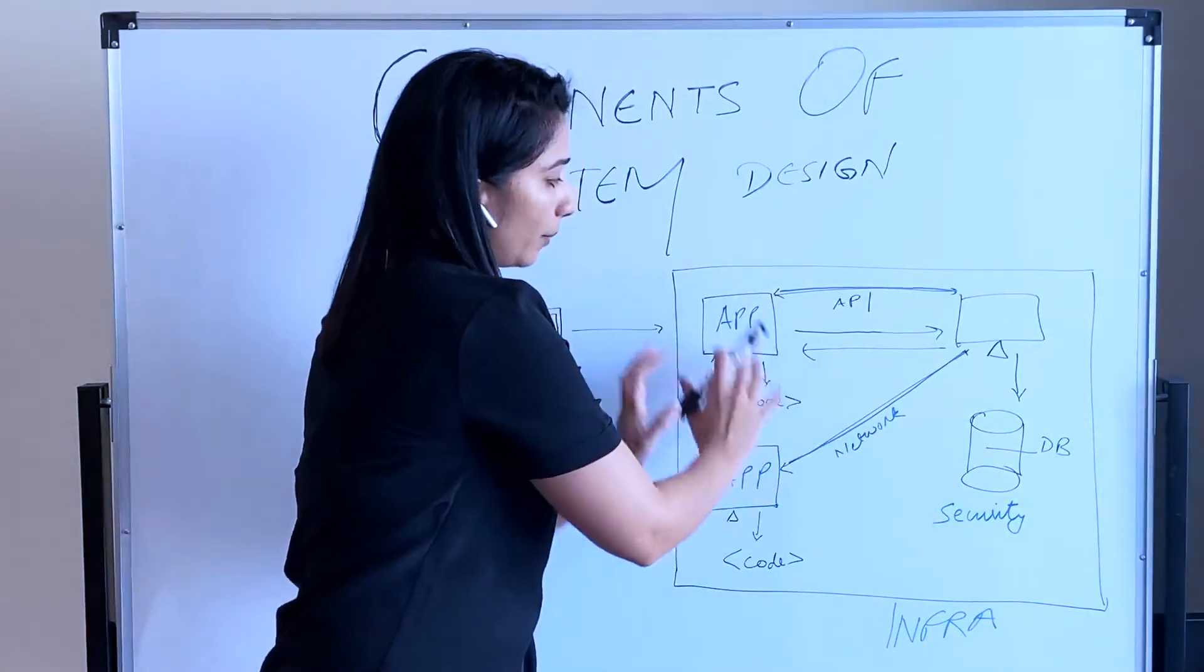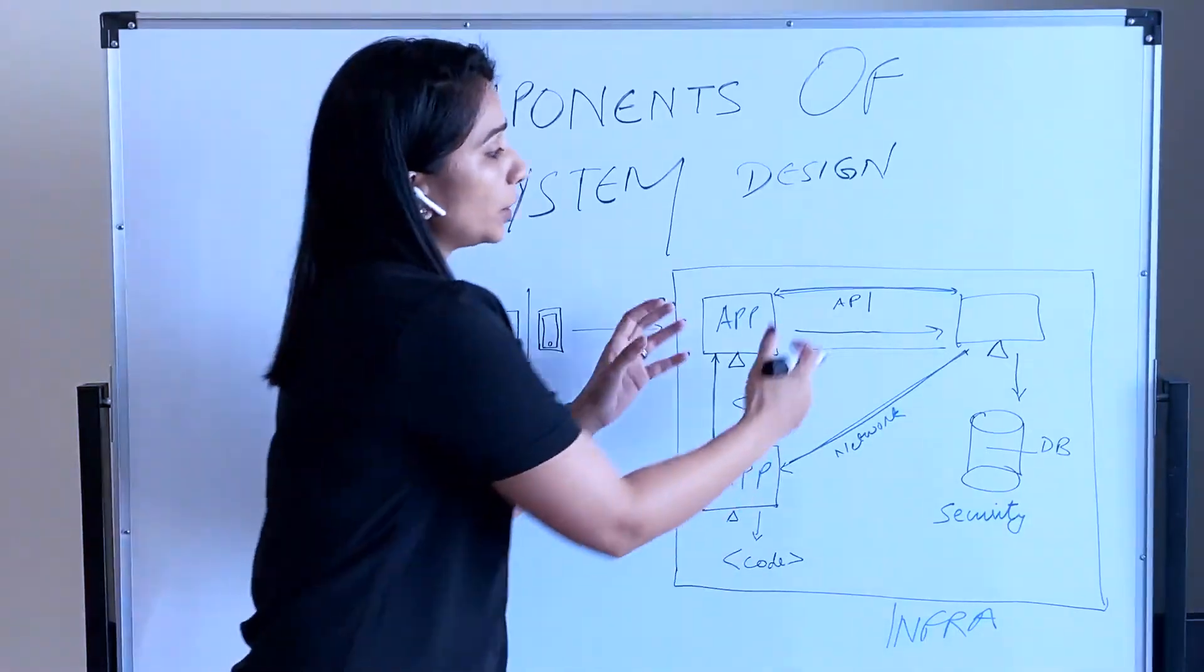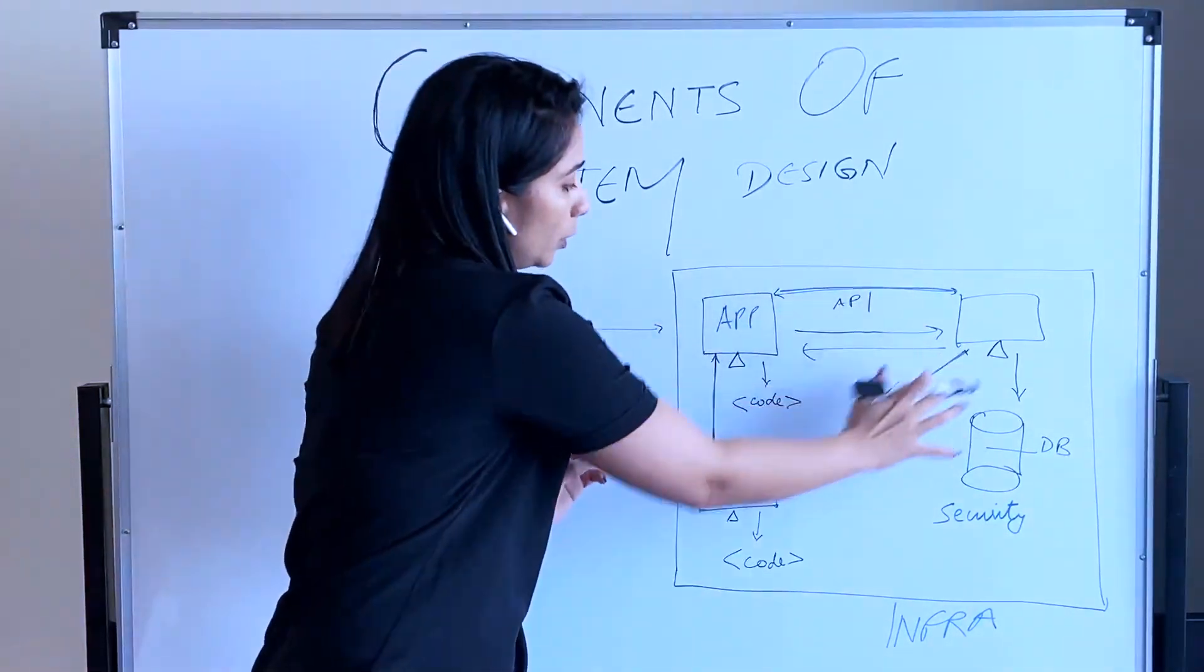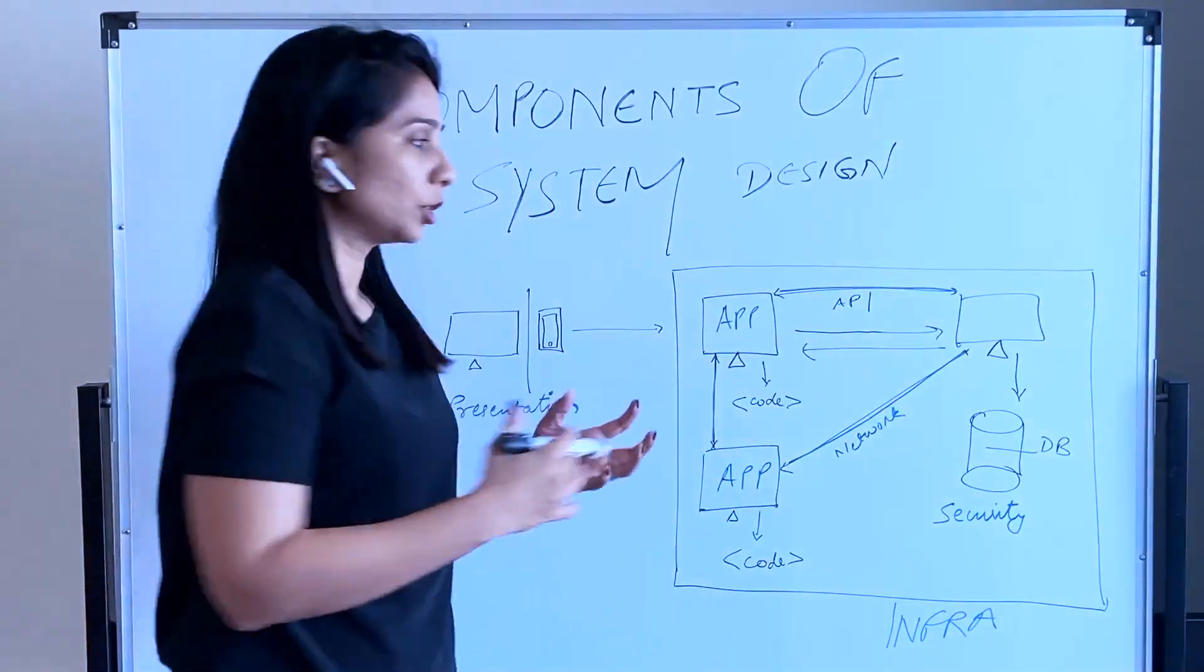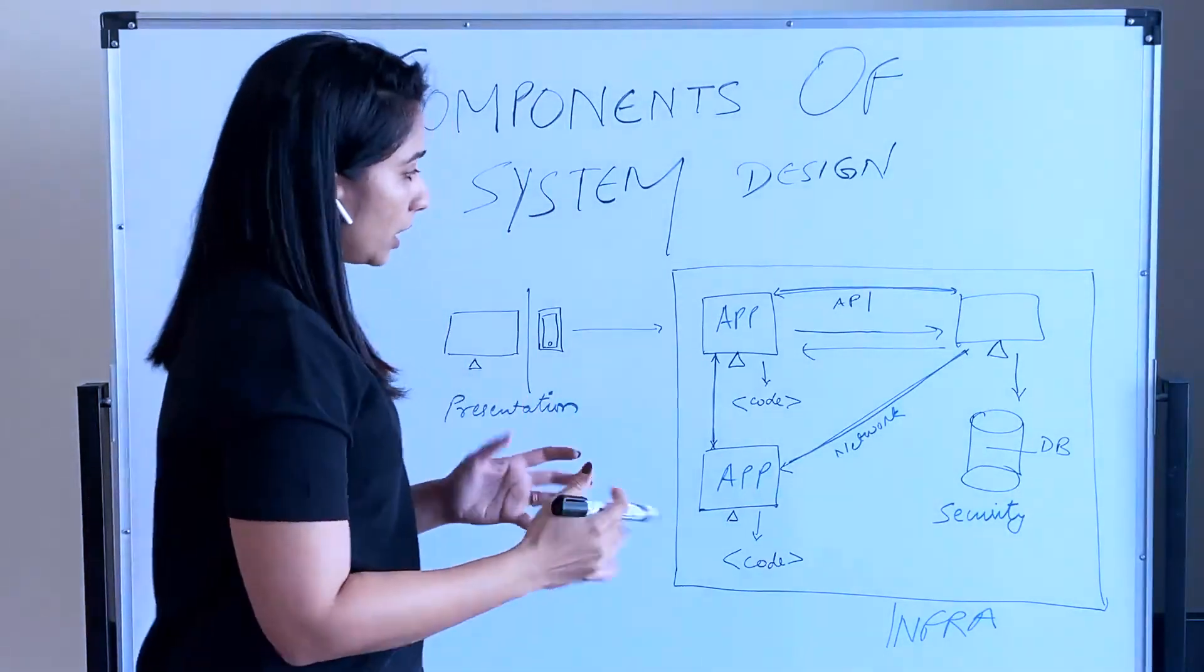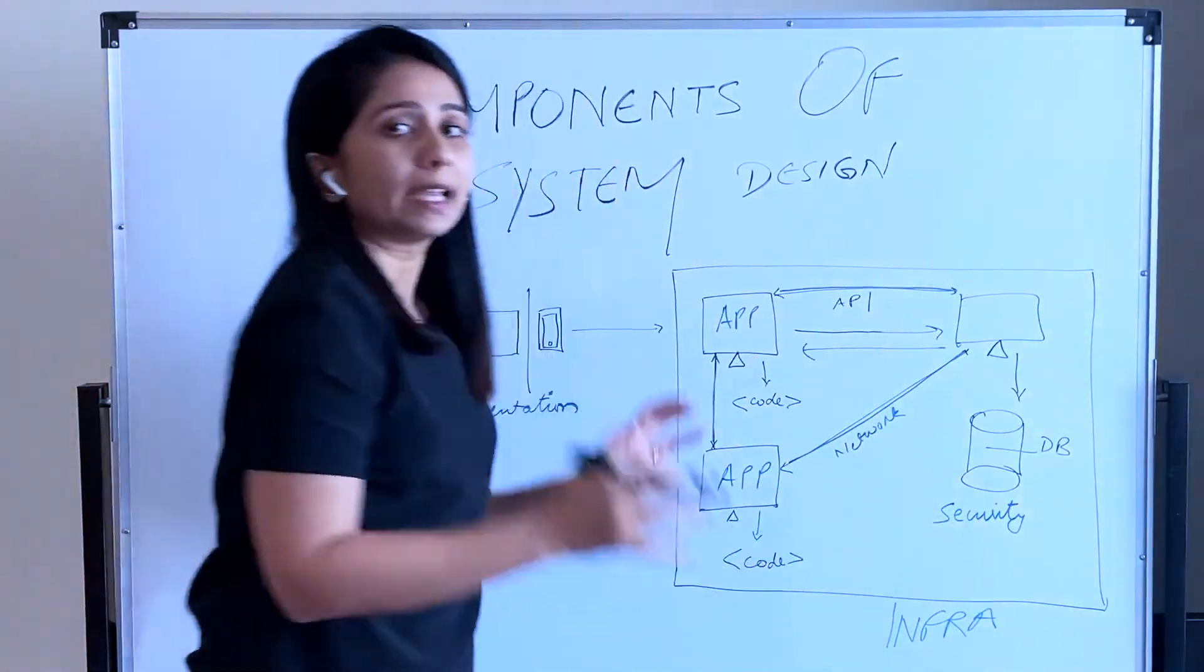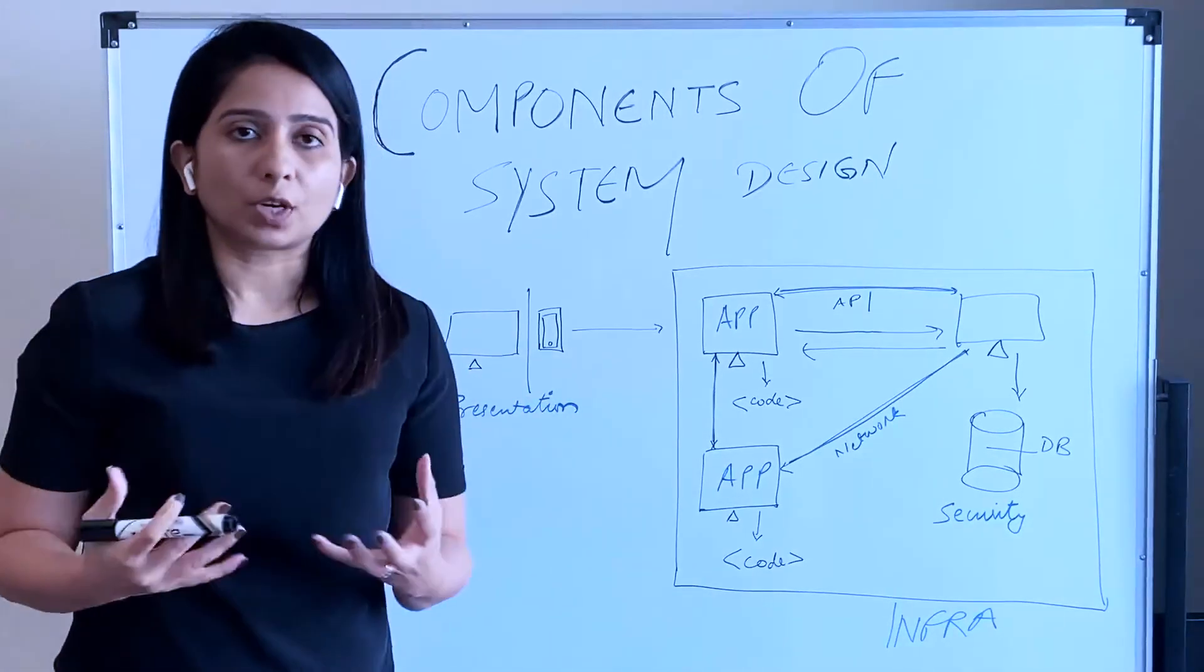Applications interact with the databases for the exchange of data. All the machines, applications, and databases are actually deployed on instances, physical computers which interact with each other over these blue lines, which is network. These application code interact with each other through APIs, messages, which again we are going to learn in detail, and all these are housed inside a cloud provider like AWS or GCP, etc., which is called infrastructure.